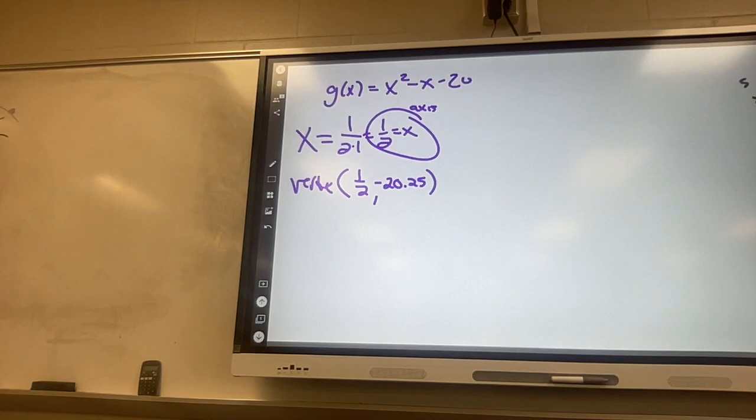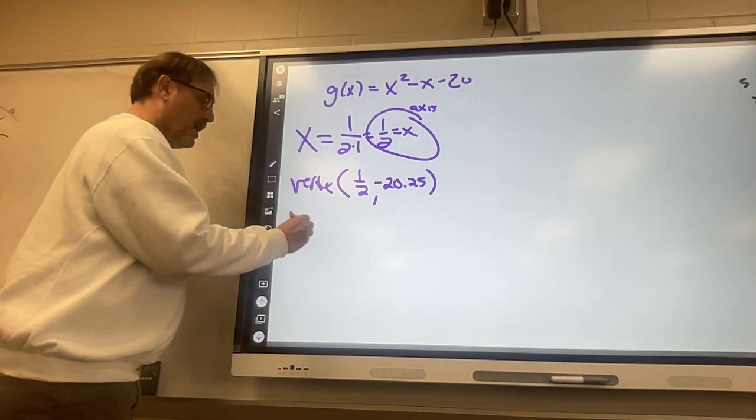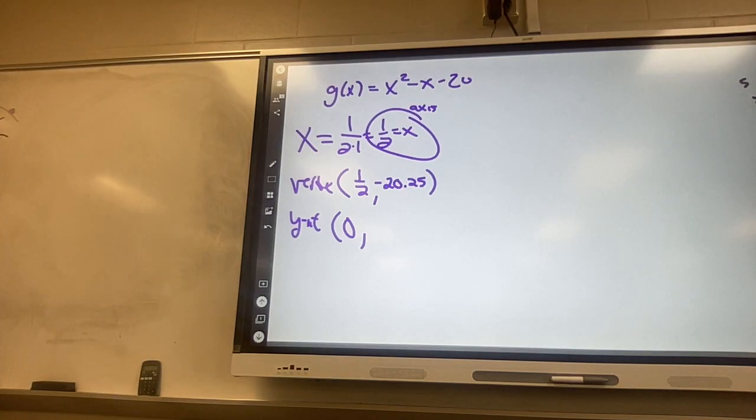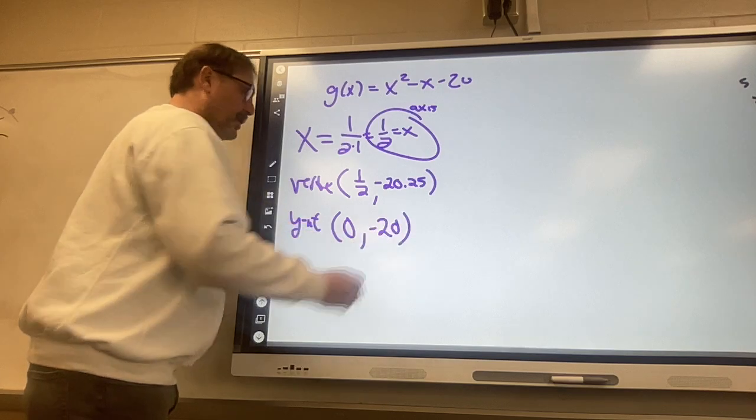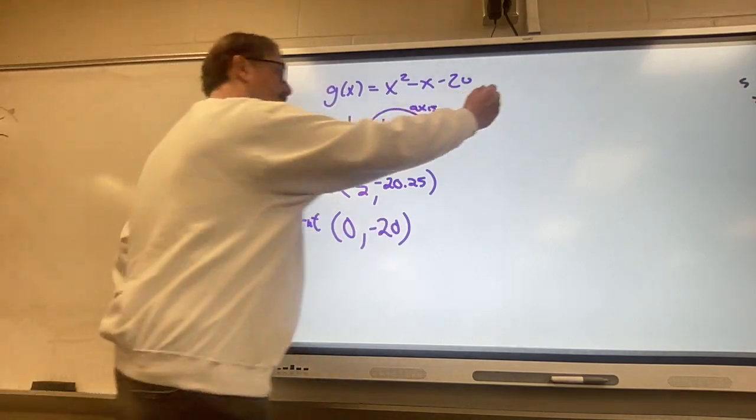Our y-intercept is easy. It is just 0 comma c, and 0 comma c is 0 comma - just look at that last one - 0 comma negative 20.